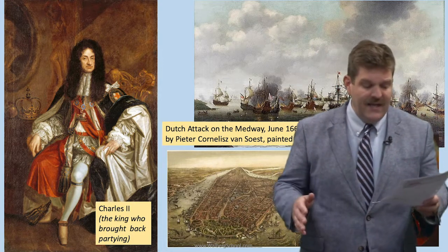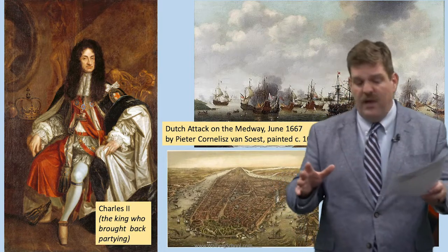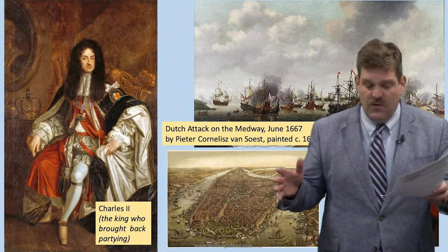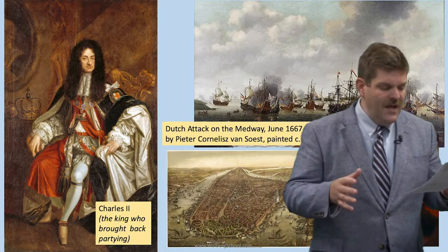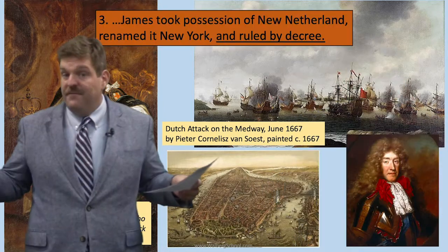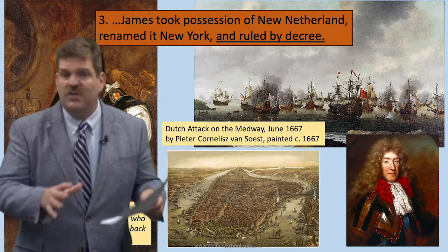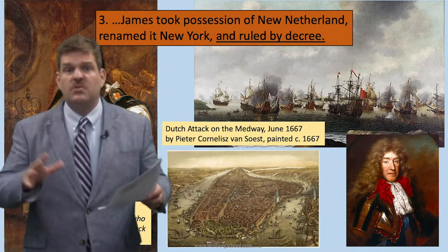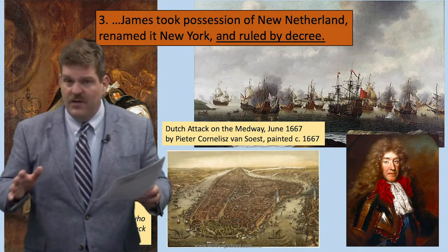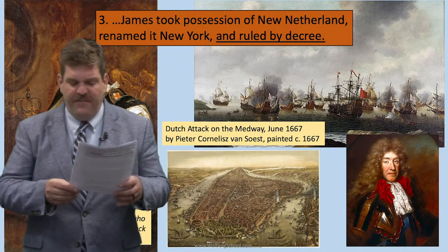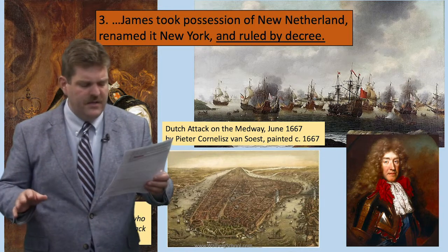King Charles II gave the Dutch colony of New Netherland to his brother James. James was the Duke of York, and so James took possession of New Netherland, named it after himself — New York — and there he ruled it by decree, which means he never actually lived in New York, but just ruled over it by issuing orders from abroad.